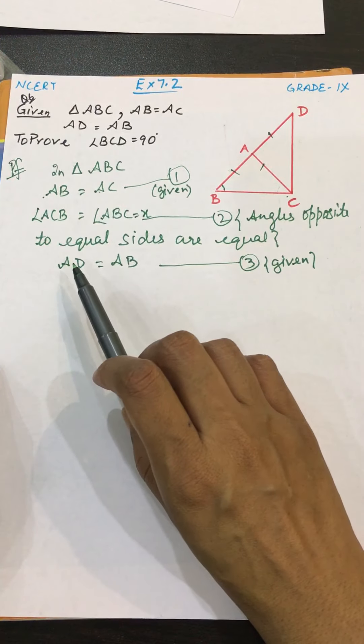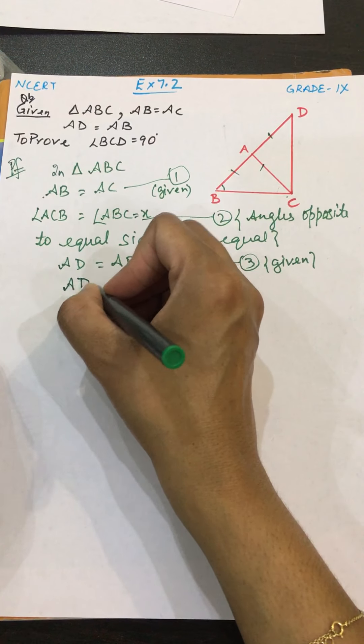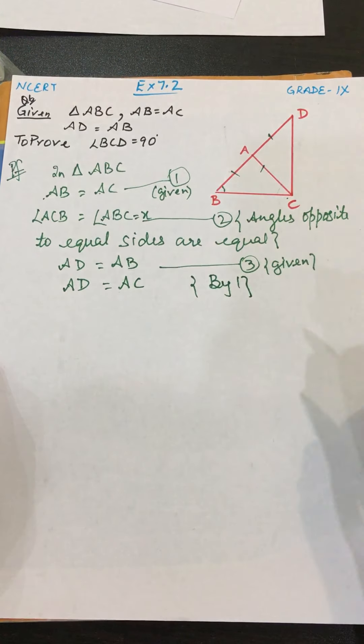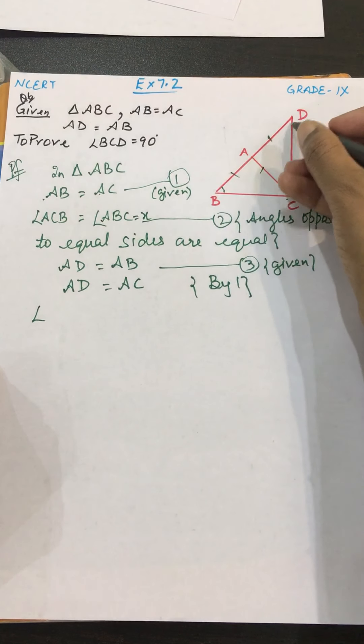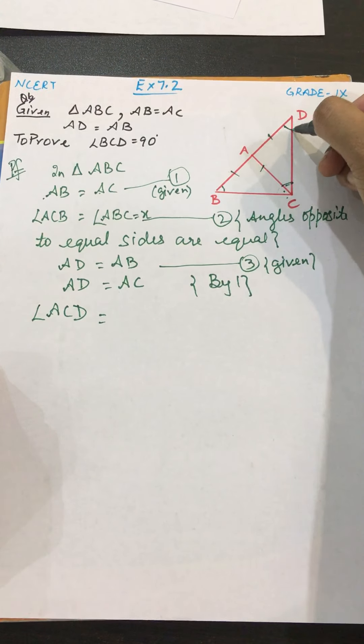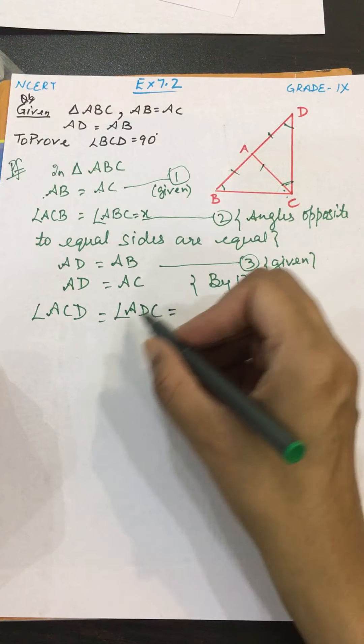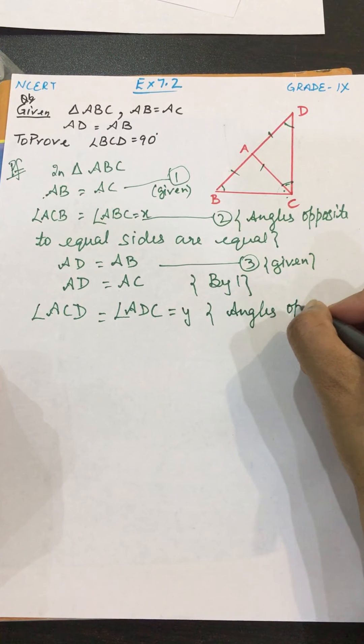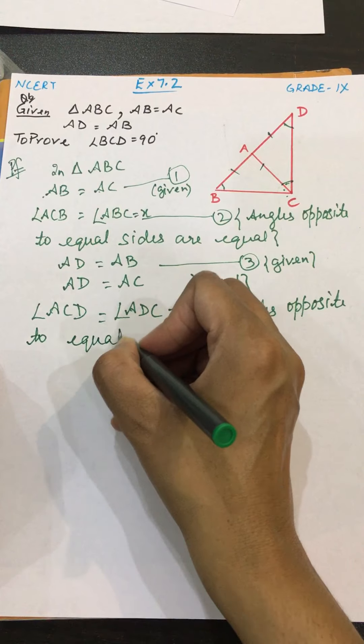See, AB equals AC and AD equals AB, then instead of AB I can write AC. So AD equals AC by the first equation. Now AD equals AC, then angle ADC equals angle ACD by the second equation. Angles opposite to equal sides are equal.